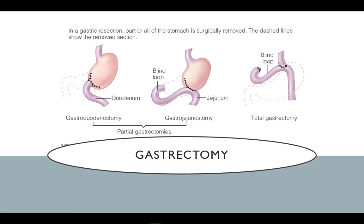In each case of a partial or total removal of the stomach, the small intestine must be rerouted to the portion of the remaining stomach. Whenever possible, the duodenum, which is the first section of the small intestine, is left because this is where the pancreatic juices and bile enter. By leaving the duodenum, it helps prevent malabsorption of nutrients.